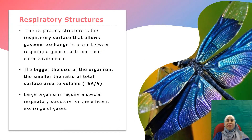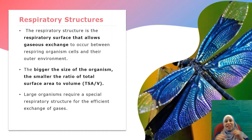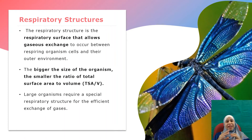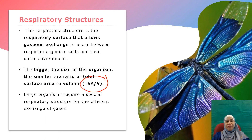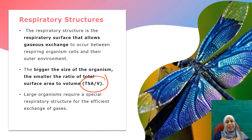What is respiratory structure? Respiratory structure is the respiratory surface that allows gaseous exchange to occur between the organism's cells and the outer environment. The bigger the size of an organism, the smaller the ratio of total surface area to volume ratio (TSA/V). So, large organisms need a special respiratory structure for efficient gaseous exchange.